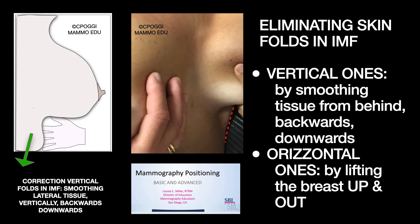The vertical fold is the most common. It comes from the lateral aspect of the breast, which is the hidden part. You should smooth the tissues out carefully, vertically, backwards and downwards. The horizontal ones come from the medial aspect of the breast — the side which faces the radiographer — and can be removed by firmly lifting the breast.